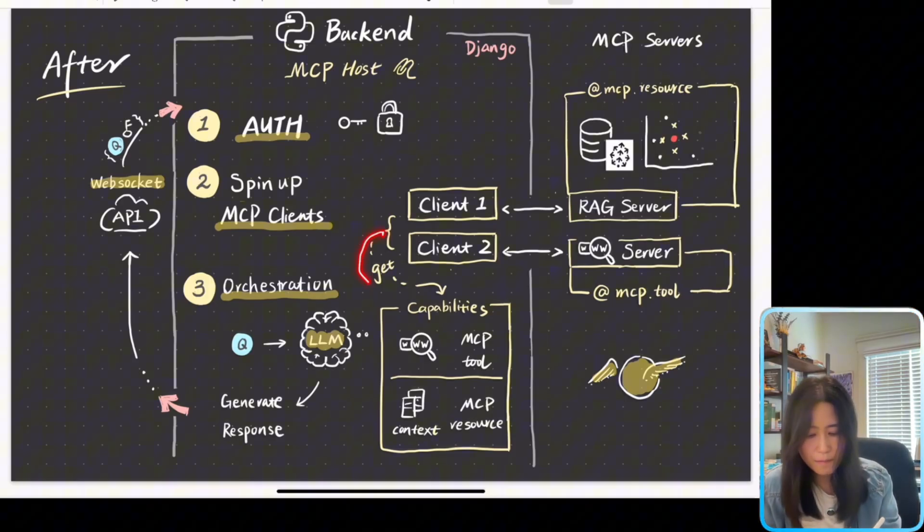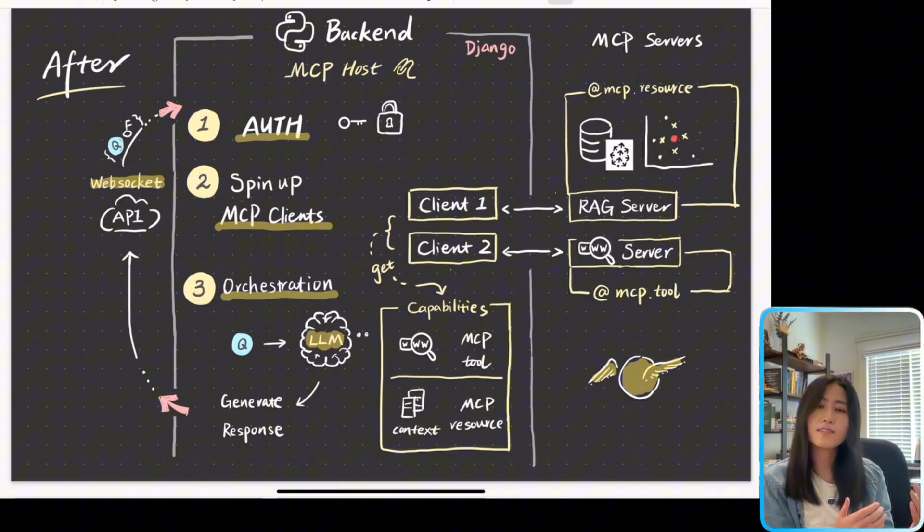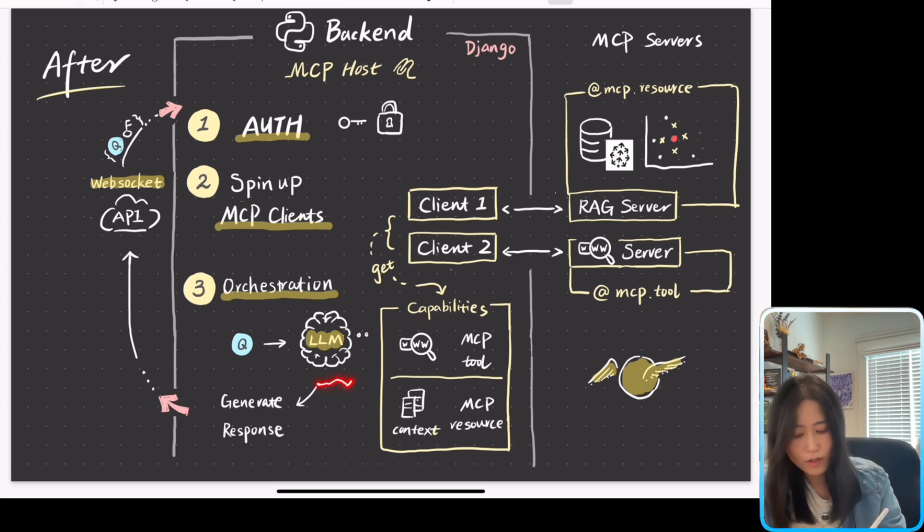And then all those capabilities is going to get exposed to large language model. When large language model is ready to receive a user query, it's going to become aware, I have these capabilities. Do I need to use them? For example, if I need a Pinecone context, then the large language model is going to make a call to the MCP client one. And client one is going to get the context from the RAG server and expose them as an MCP resource. And then the large language model can use the context to generate response and then send it back to WebSocket.